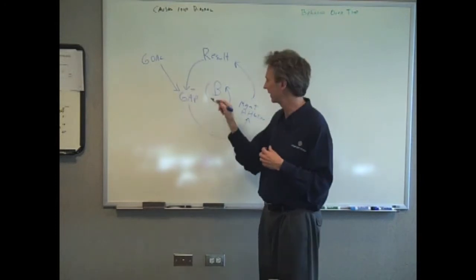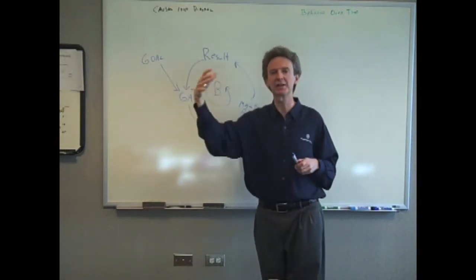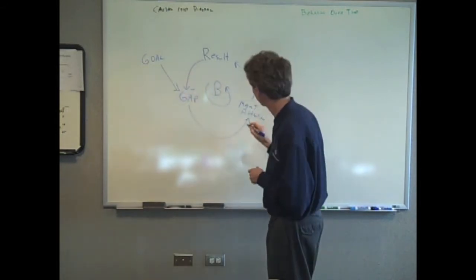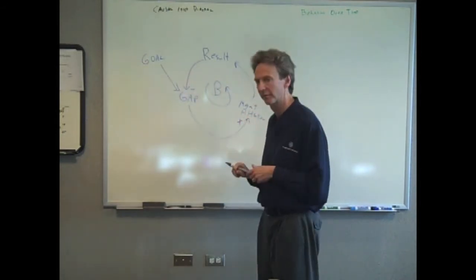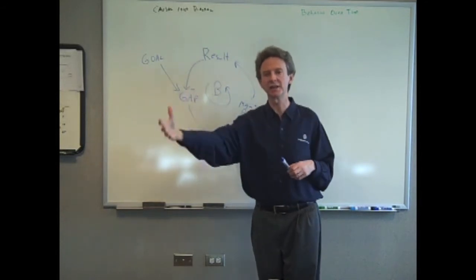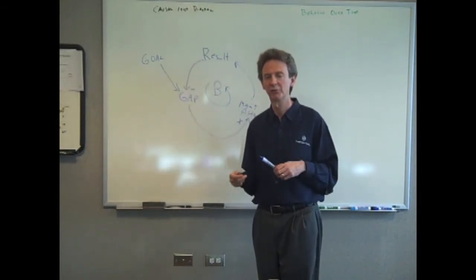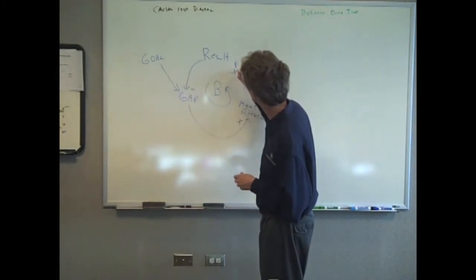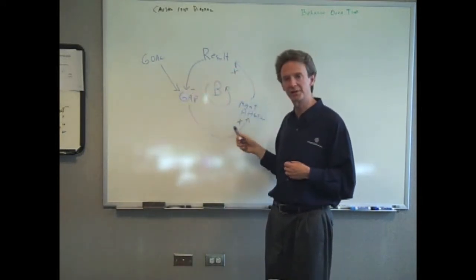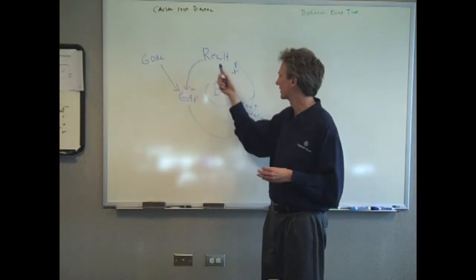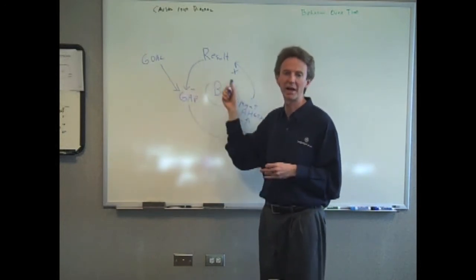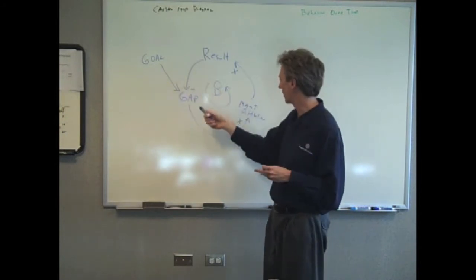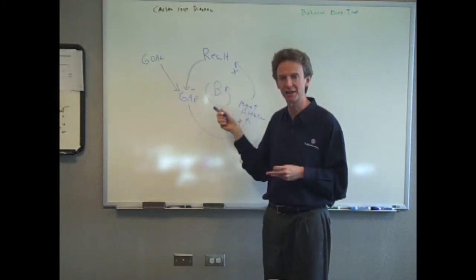So an increase, and then you keep going around the circle. An increase in the gap will mean an increase in management attention. And an increase in management attention will give you an increase in the result. Okay? So it is also a balancing loop because there's an odd number of minus signs here, basically. Okay? So you've got one minus sign, two pluses, that makes it a balancing loop.